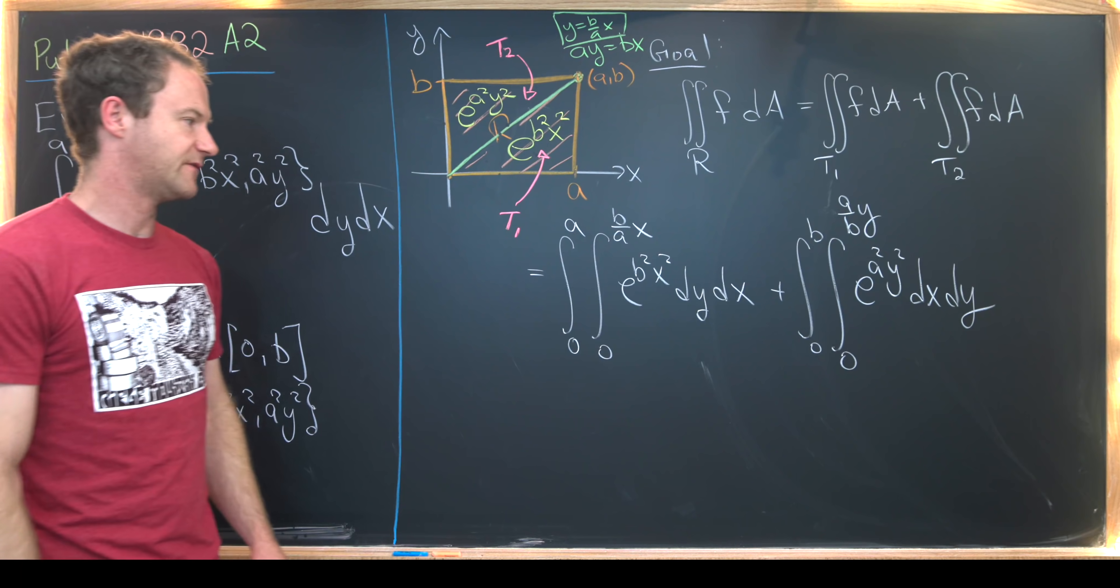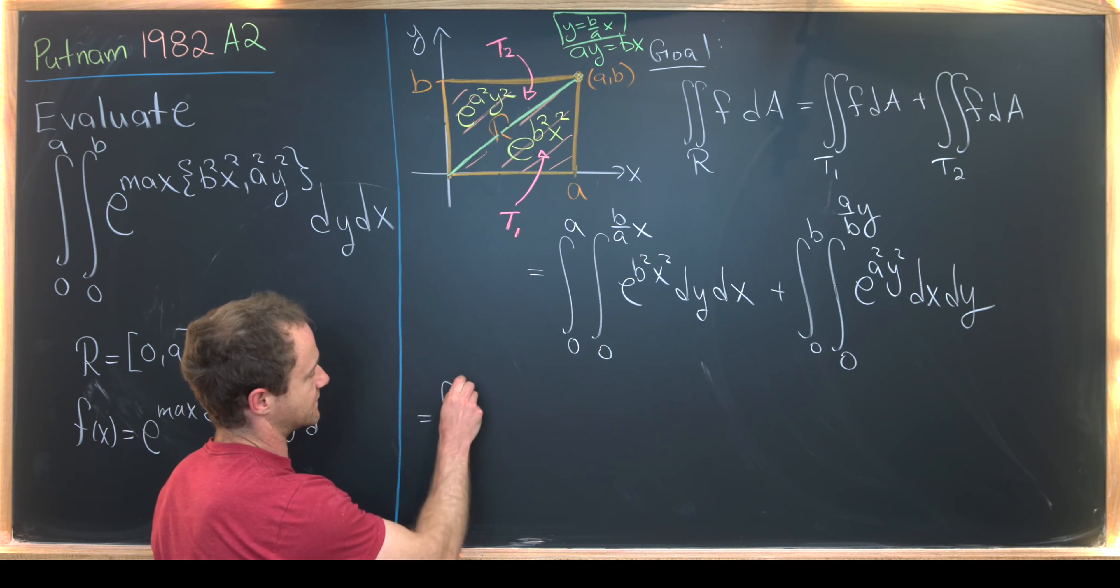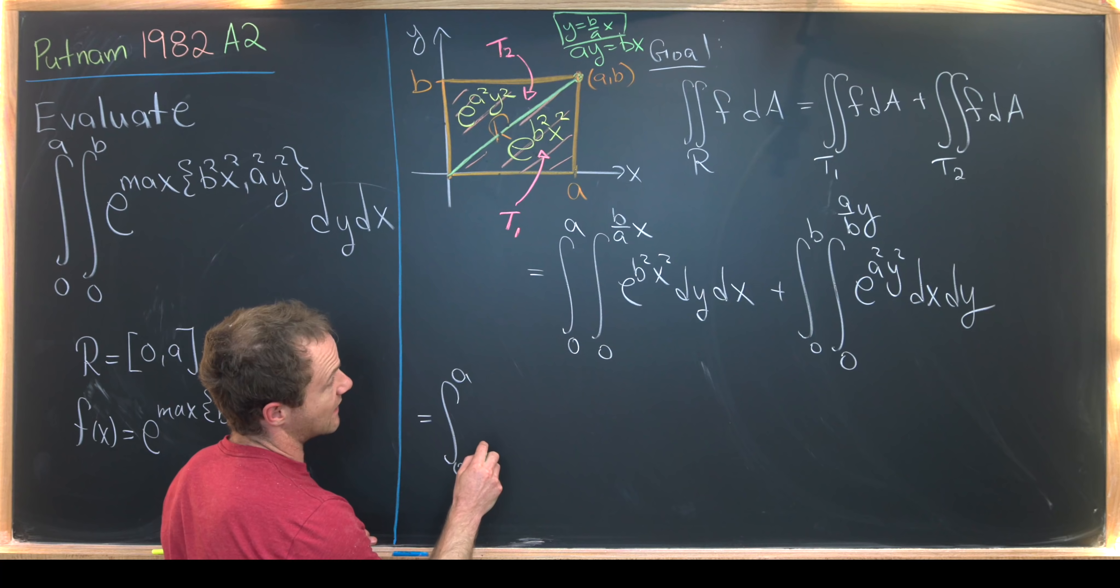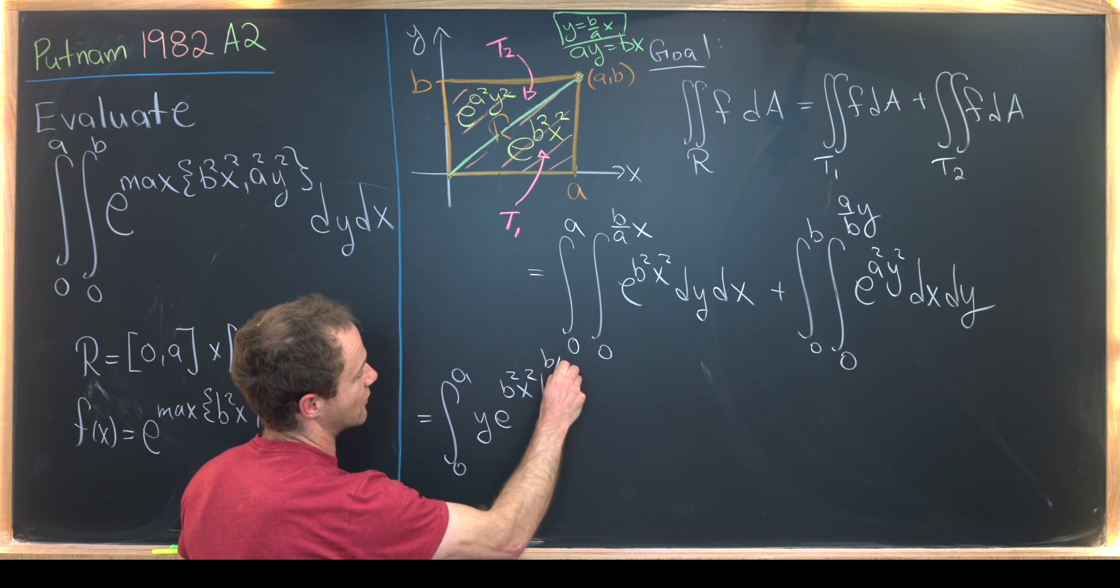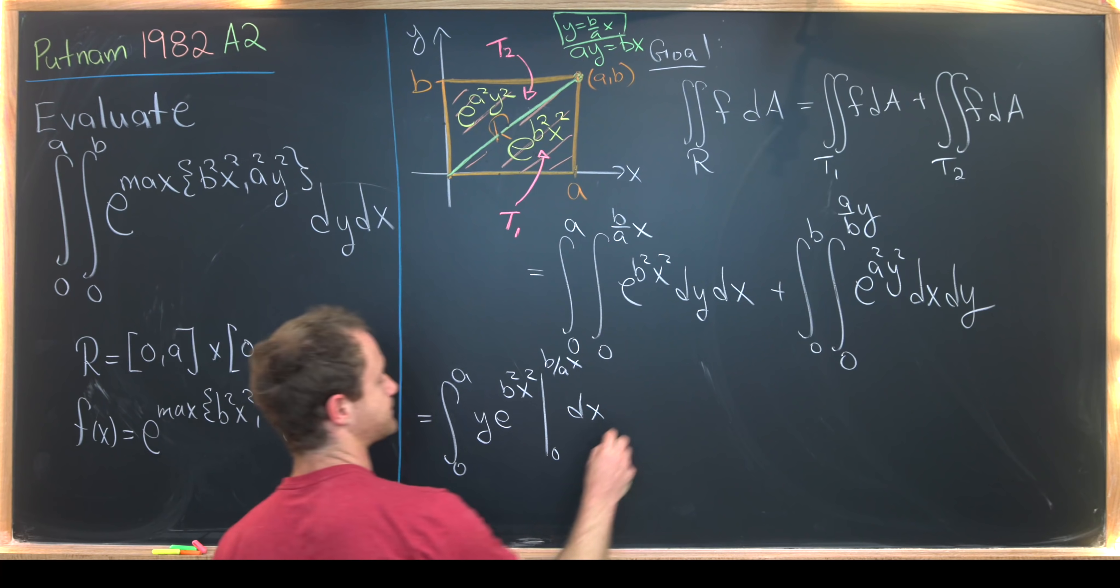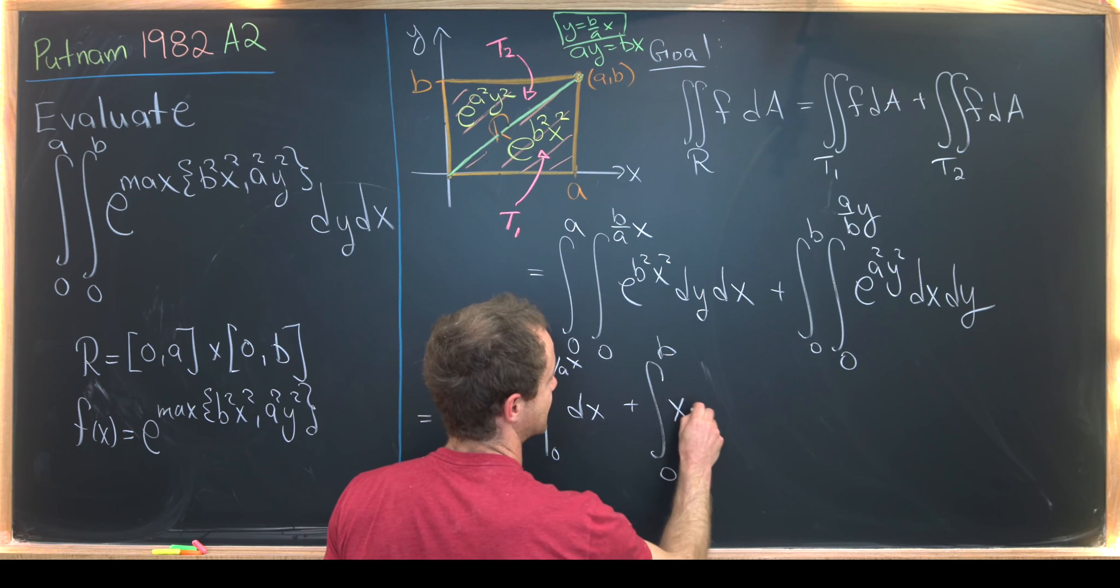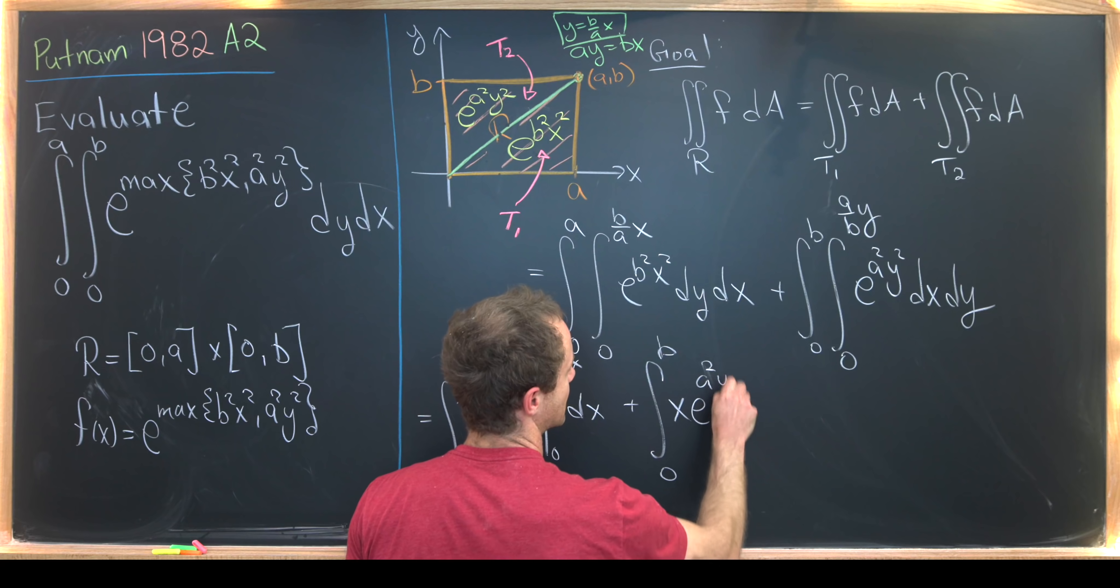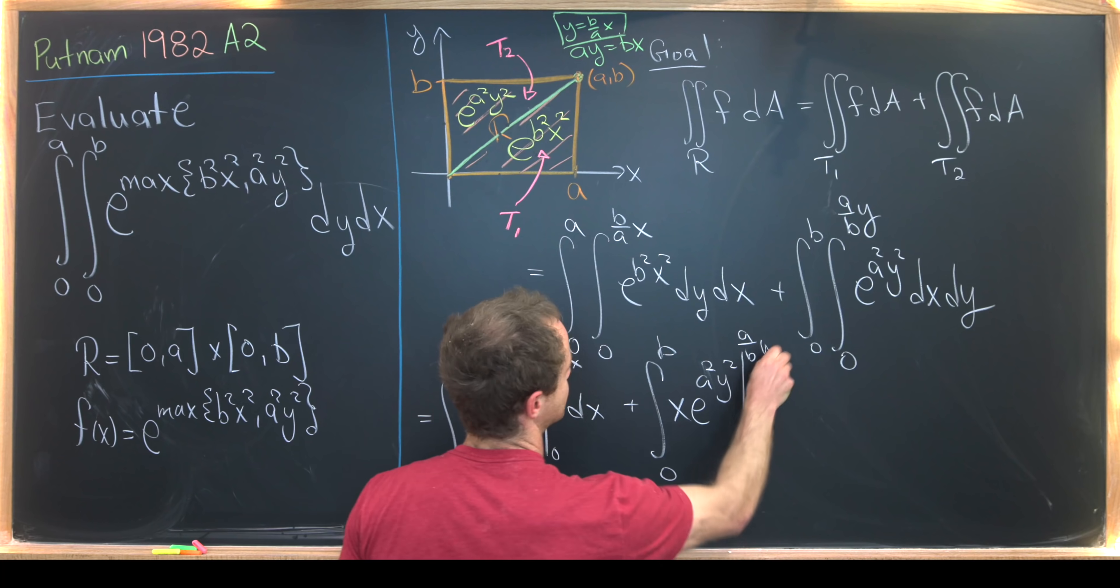Now we're pretty much ready to finish it off. So we can do these inner integrals. So we're left with the integral from zero to a of y times e to the b squared x squared evaluated from zero to b over a times x. And that's an x integral plus the integral from zero to b and then x times the integral from sorry, the function e to the a squared y squared evaluated from zero to a over b times y.